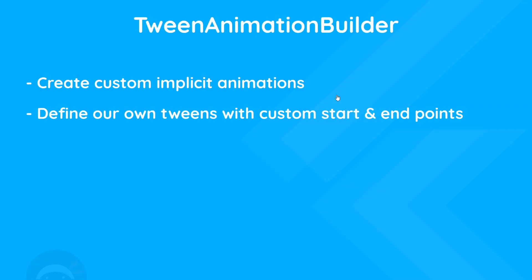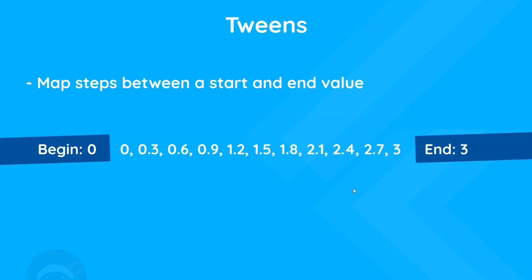Occasionally you're going to want to animate something in a way that requires a bit more control than just using a built-in implicit animated widget. For example, you might want to animate two or three different properties all at once — like the padding, the opacity, and the position — and set specific start and end points. To do this we can use the TweenAnimationBuilder widget, which is a way to create custom implicit animations and define our own tweens with custom start and end points. The job of a tween is to map steps between a start and end value.